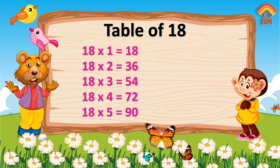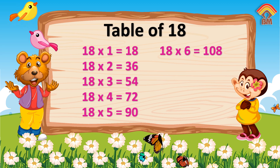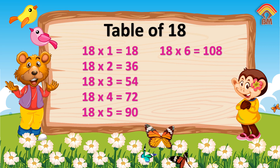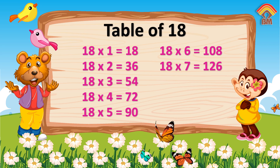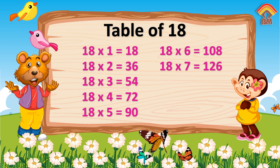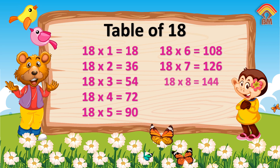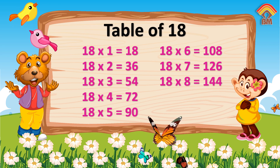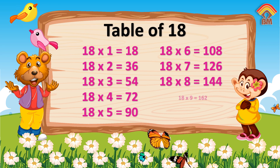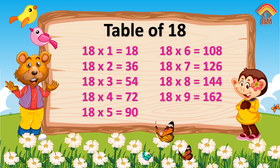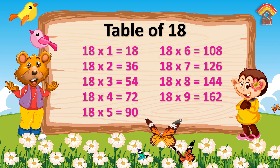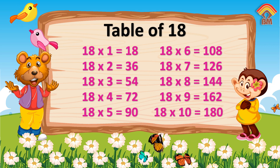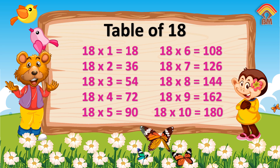18 sixes are 108. 18 sevens are 126. 18 eights are 144. 18 nines are 162. 18 tens are 180.